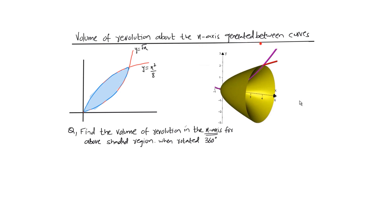Now consider two curves where the shaded region between them is rotated 360 degrees about the x-axis. The resulting solid is a hollow solid. To find its volume, find the volume generated by the outer curve, find the volume generated by the inner curve, and subtract the two.